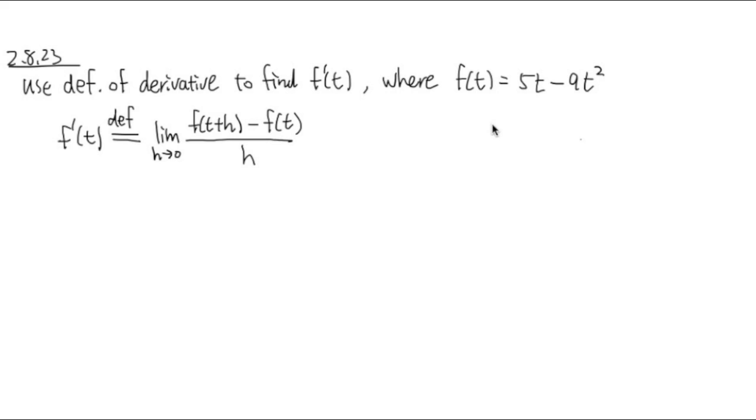Let's take a look at our function. f of t is this, right? And we also need to figure out what's f of t plus h. Once again, f of t is 5t minus 9t squared. With this set, f of t plus h, all we need to do is plug in t plus h into all the red t's. That's all.